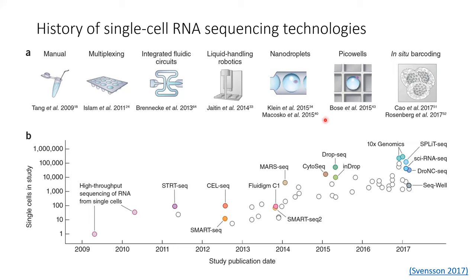DropSeq, InDrop, and 10x Genomics introduced microfluidic droplet chemistry, where nanoliter-sized droplets encapsulate cells and barcoding beads. This approach decreases background noise and further decreases the cost, increasing the number of cells that can be sequenced. High-density microplate technologies such as BD-Rhapsody have also been introduced, improving the mRNA capture process to increase the coverage of the transcriptome. Today we're looking at typical data sets comprised of tens of thousands of cells that can reach upwards of one million cells, and recently we've seen this technology explode in its use and interest.